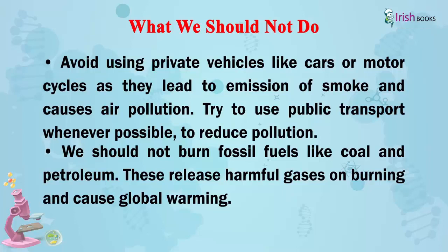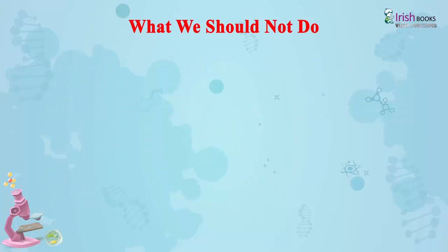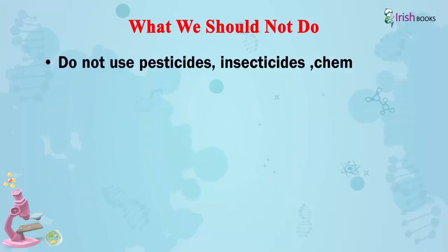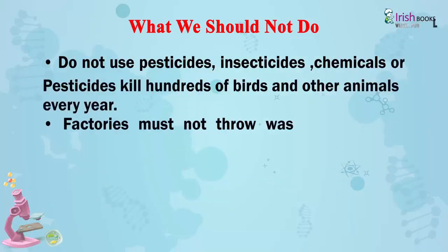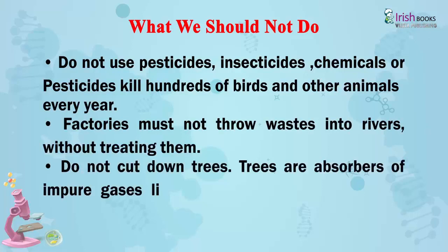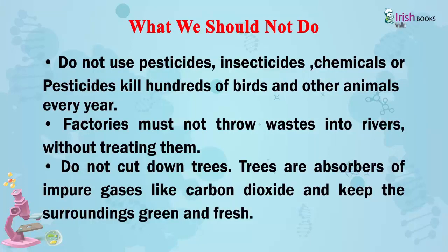We should not burn fossil fuels like coal and petroleum. These release harmful gases on burning and cause global warming. Do not use pesticides, insecticides, or chemicals. Pesticides kill hundreds of birds and other animals every year. Factories must not throw waste into rivers without treating them. Do not cut down trees.